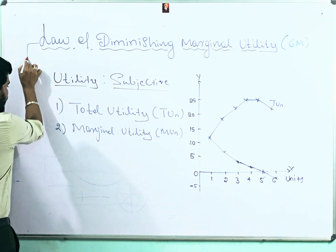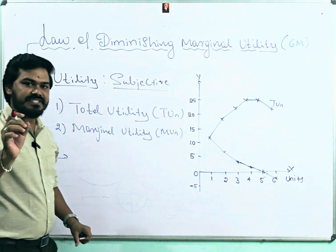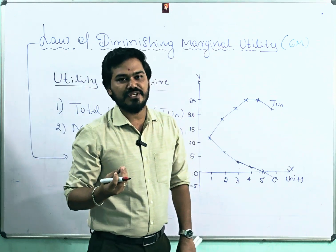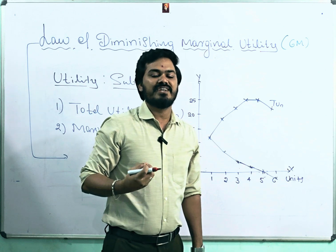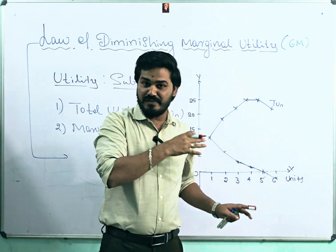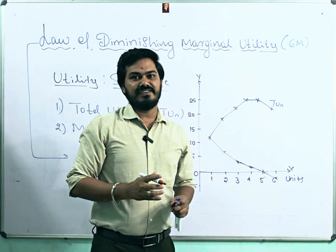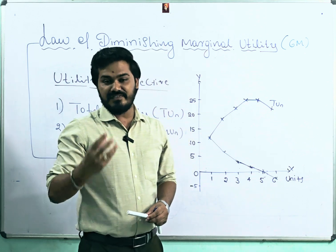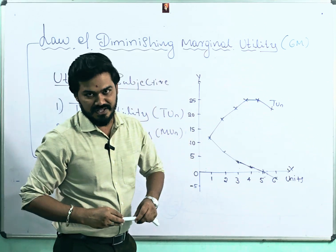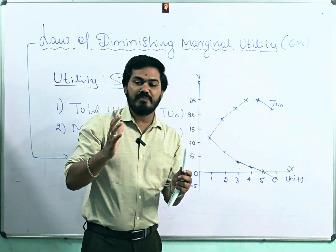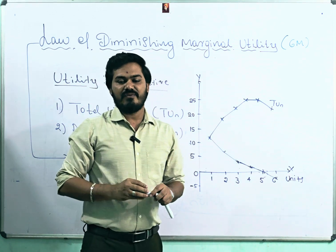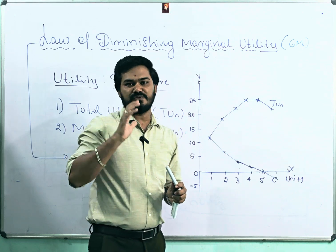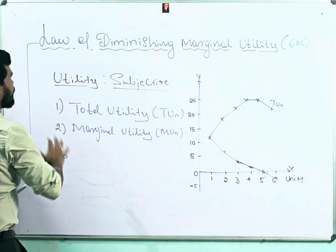Now let's come to the main topic: the Law of Diminishing Marginal Utility — and how to get six marks for this concept. Most students say they wrote more than two to three pages but still can't score six out of six. Many students also face difficulty scoring full marks in economics overall. In future videos, I will explain how to score full marks, how to make a good paper presentation, what structure to follow, what key points to include, and how to frame your answer.